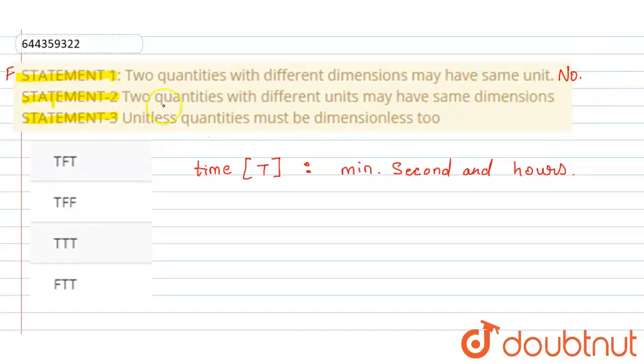Let us understand statement 2 by an example. We have angular velocity and frequency. The statement says two quantities with different units. We know the unit of angular velocity is radian per second, and the unit of frequency is second inverse.